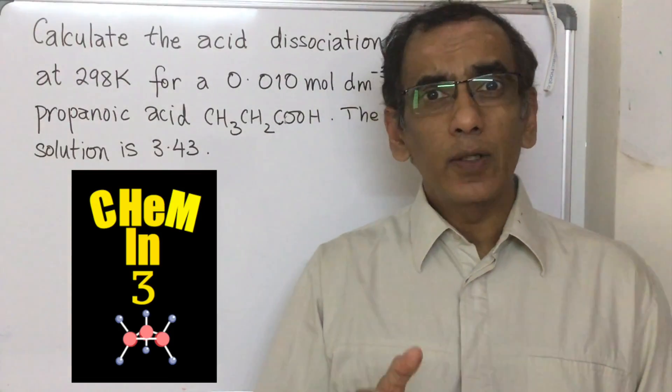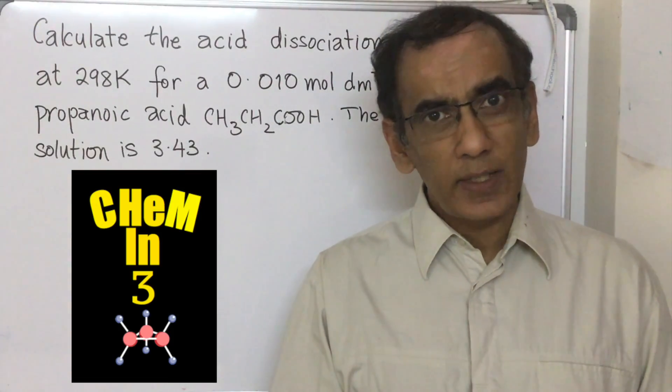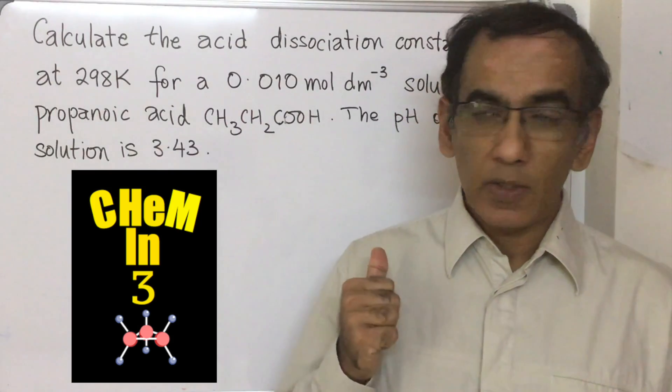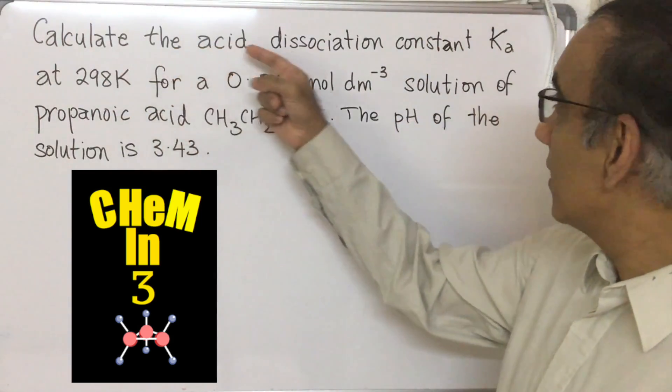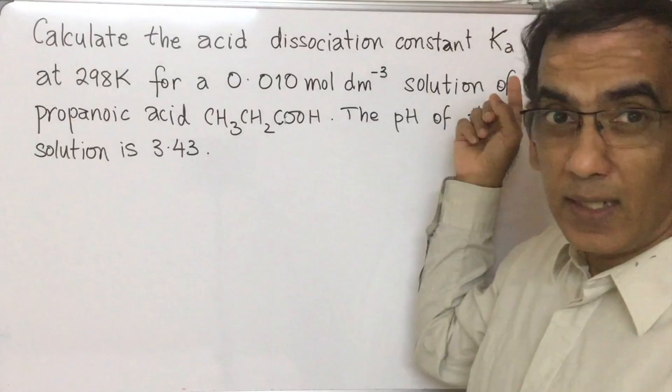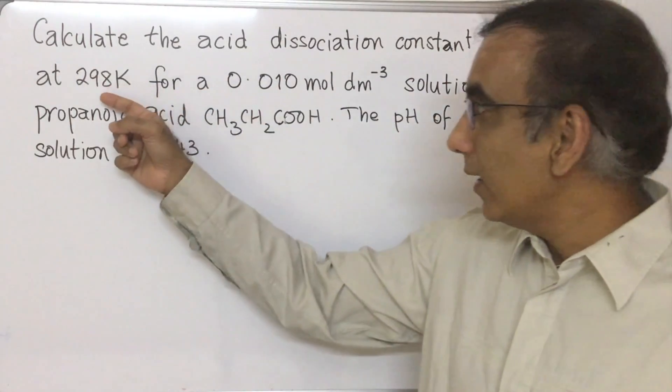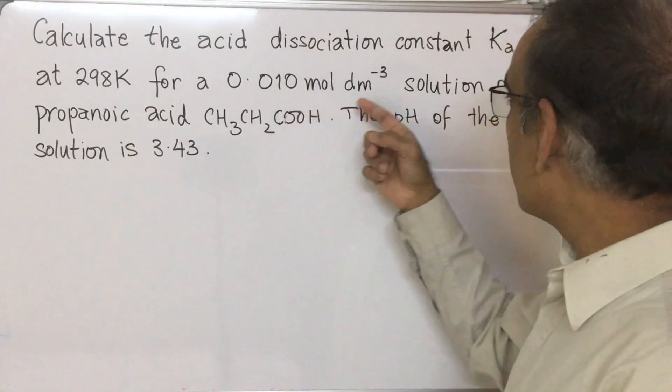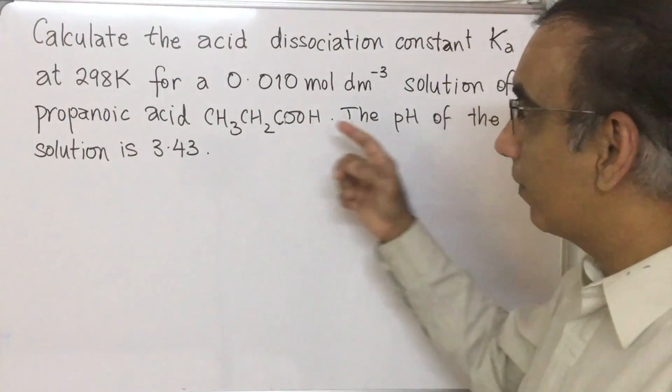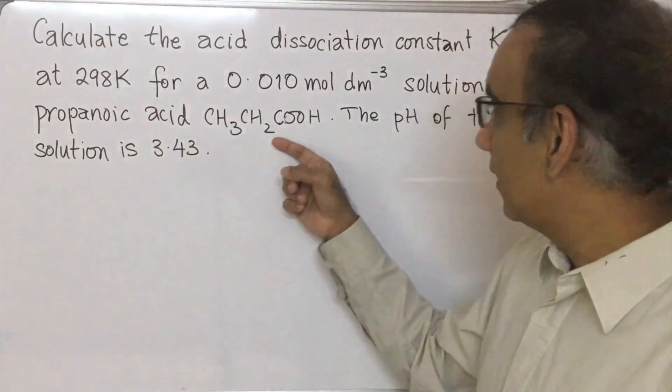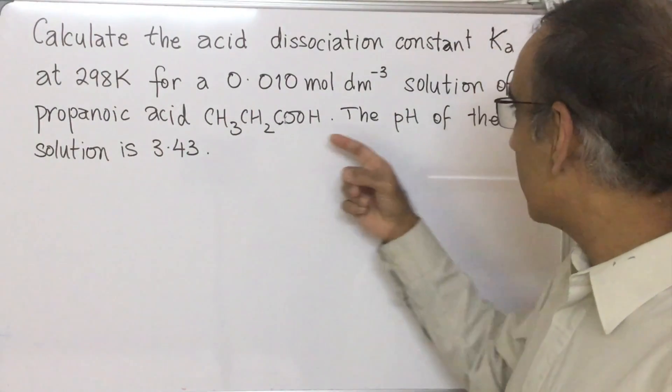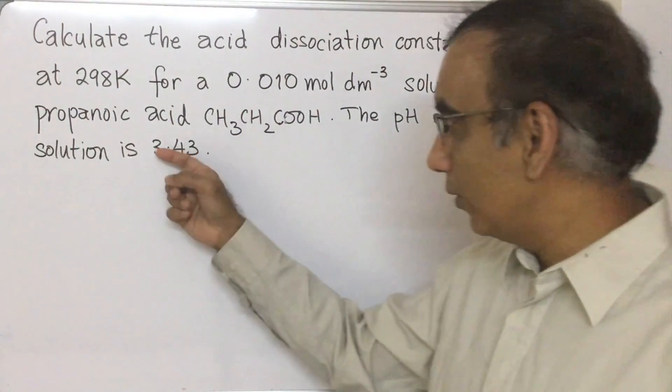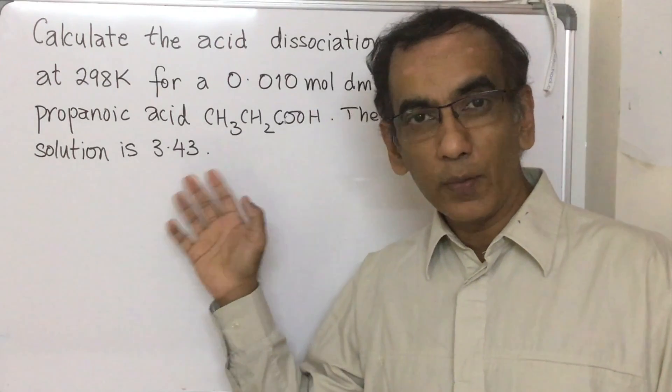Hello and welcome again. Today we look at yet another calculation type question for IB chemistry. Calculate the acid dissociation constant Ka at 298 Kelvin for 0.010 moles per dm³ solution of propanoic acid, CH₃CH₂COOH. The pH of that solution is 3.43.